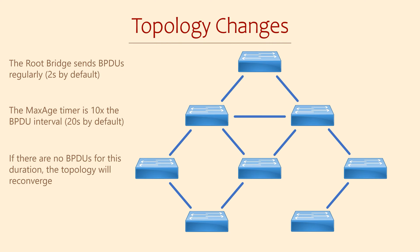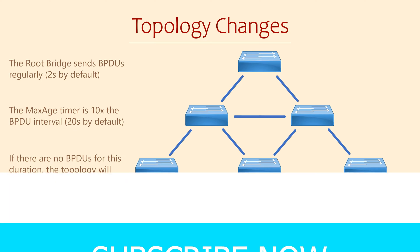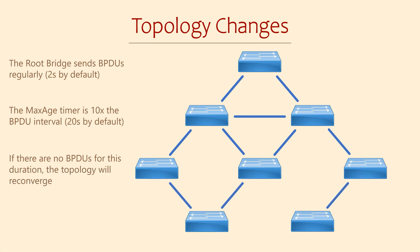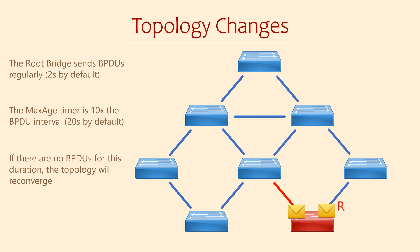This means that the Spanning Tree algorithm needs to run again and probably make different decisions. By way of example, we're going to add a new link to our switch. It's now going to receive BPDUs on two different ports, as BPDUs will travel over all possible paths. The result is that our switch now has more than one path to the root bridge. The switch will need to look at the path cost, and it can see that there is a smaller cost in this BPDU, making the new BPDUs superior.